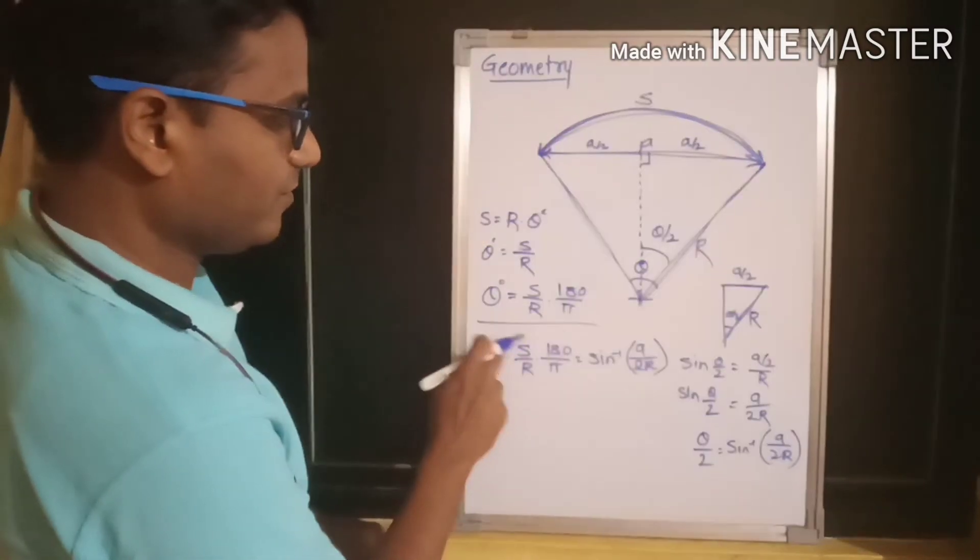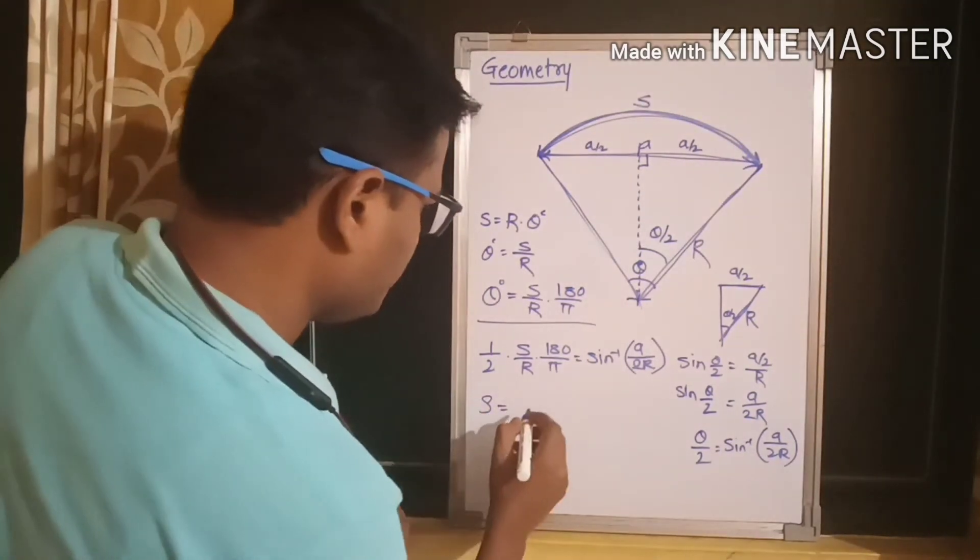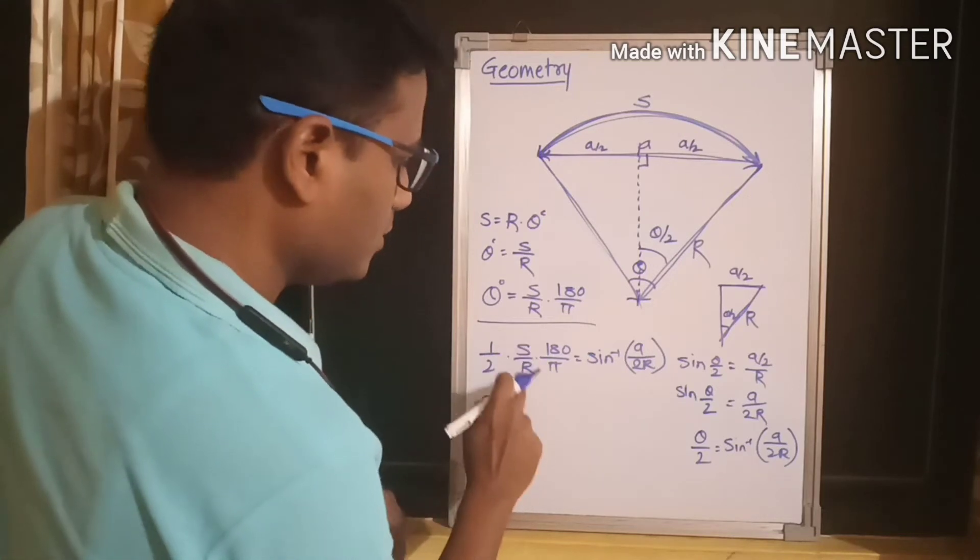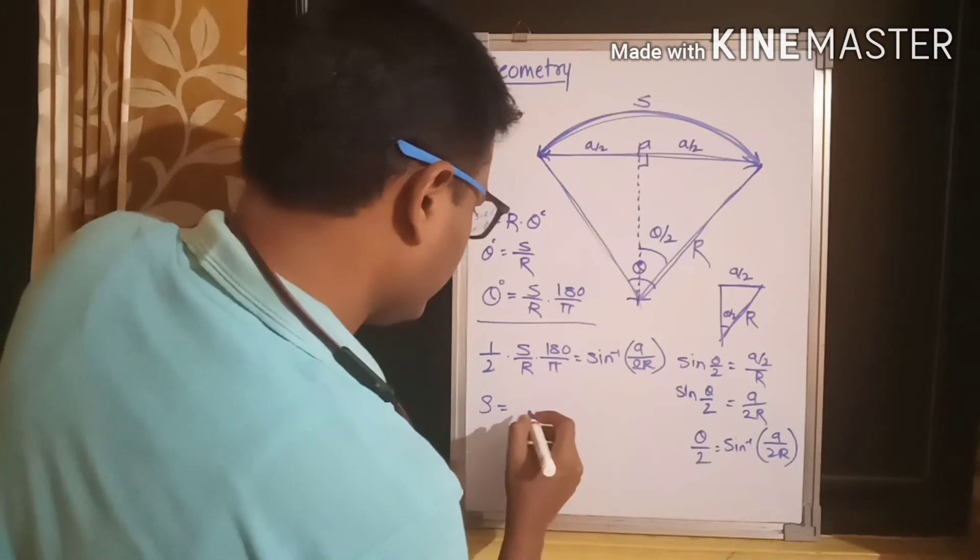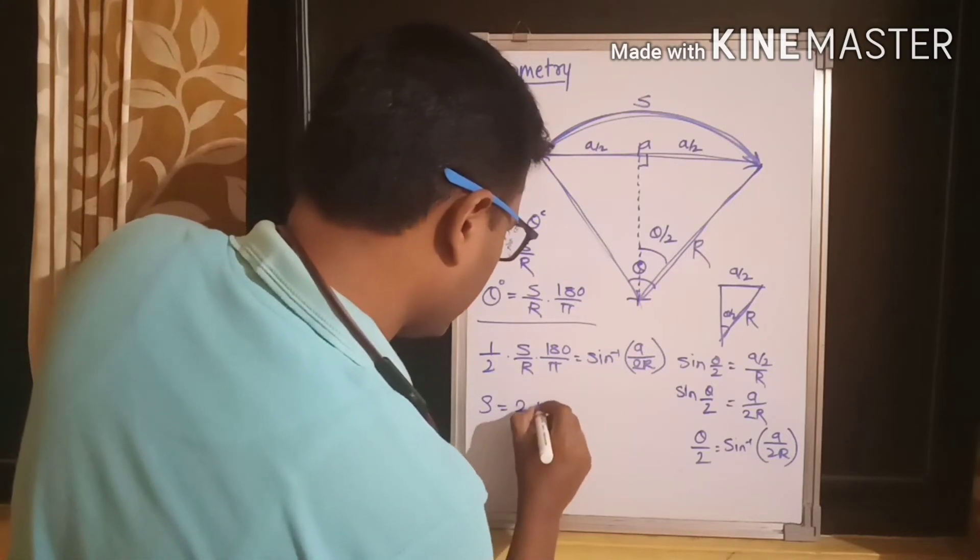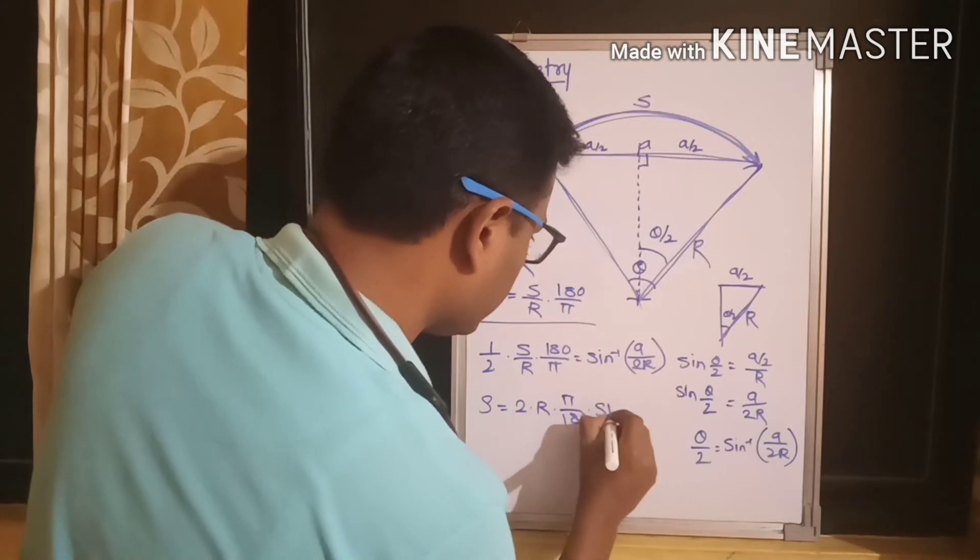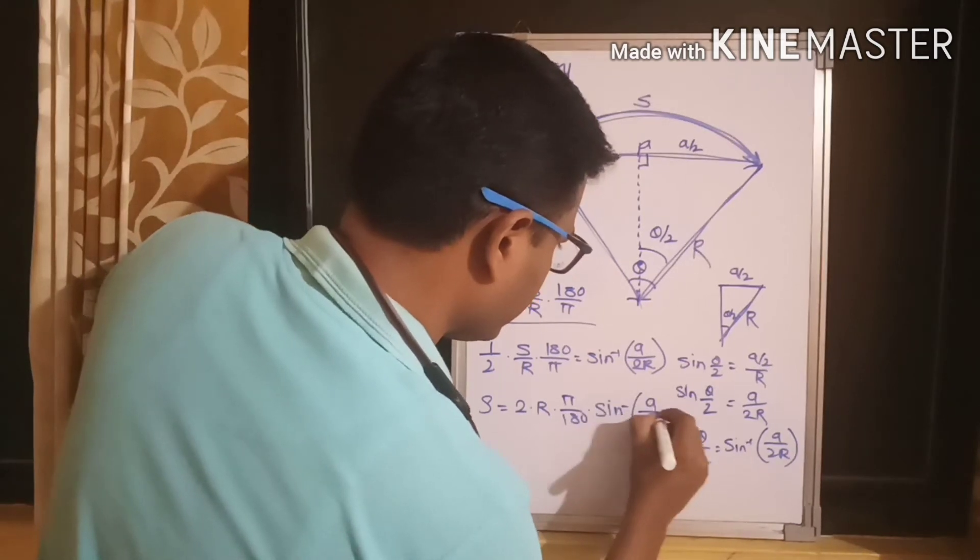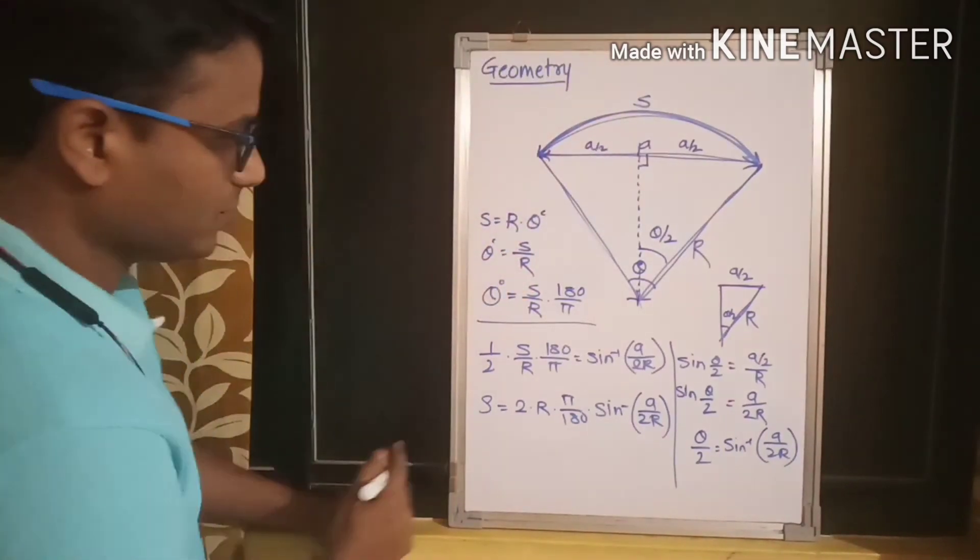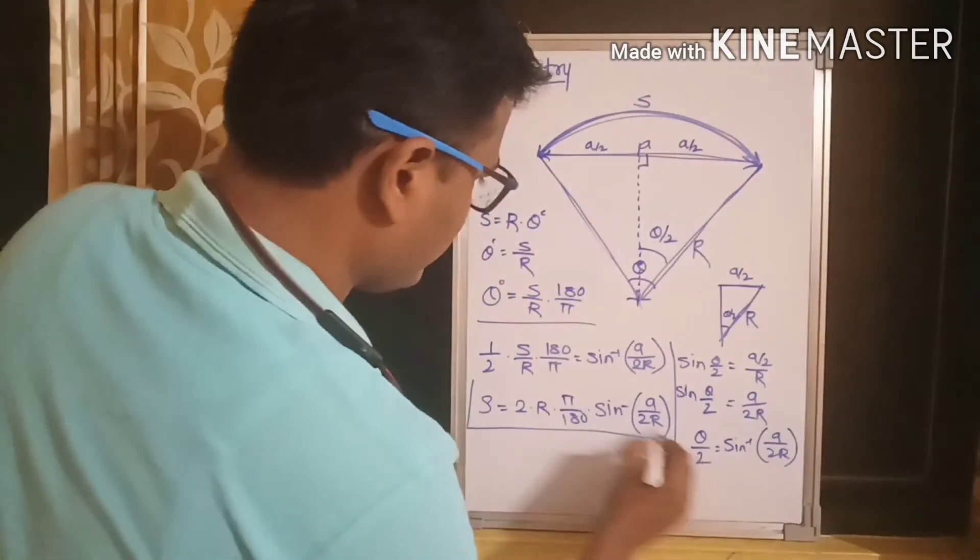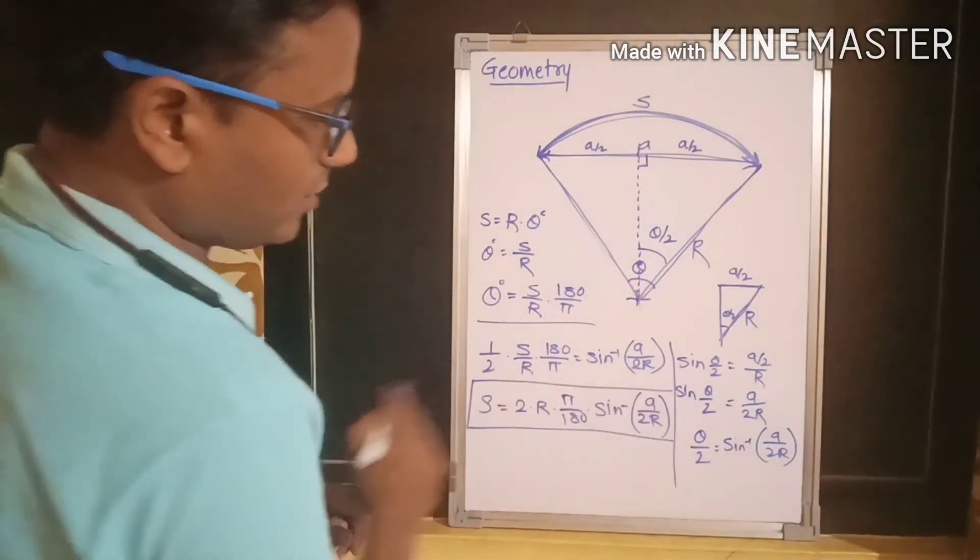Now, we are to put this s value on one side. So, it becomes s is equal to this 2r, 180 and pi should go on the right hand side. So, what will happen over there on the right hand side? So, this gives us the final equation, the relationship between the arc length and the chord length.